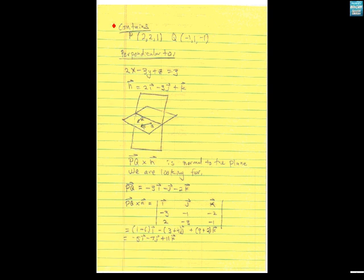We have a plane that contains two points, P and Q, and we're looking for its equation. We know it contains these points. That's not enough to determine it, but it's also perpendicular to this plane we have here, 2x minus 3y plus z equals 3.